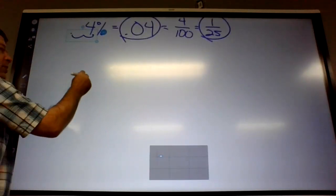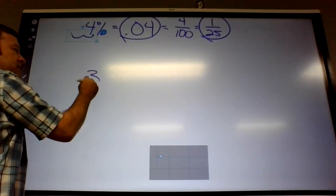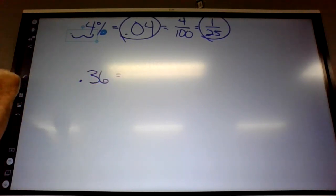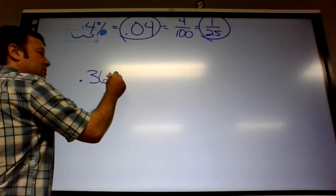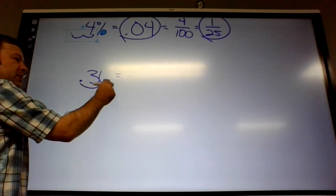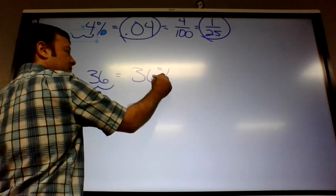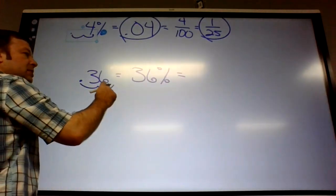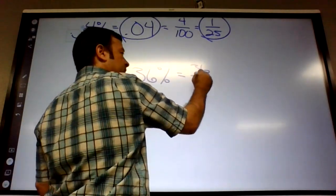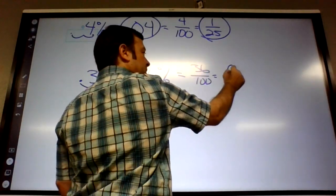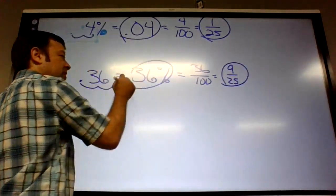What if we go the other way? What if it's like 0.36? What's that as a percent? Right, you go the other direction, so it's 36%. What's it as a fraction? 36 over 100, but if you divide those by 4, you can let your calculator reduce it. You get 9 over 25.